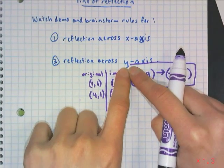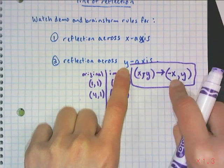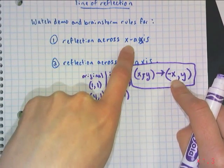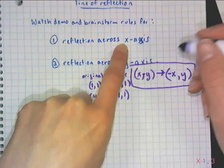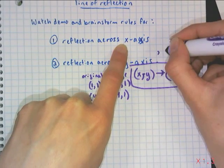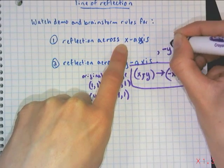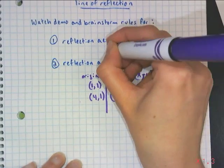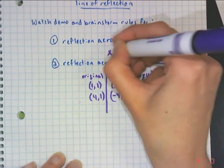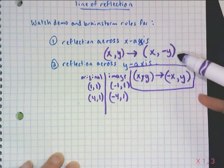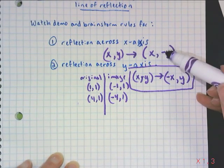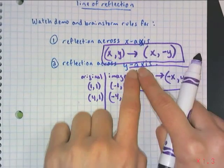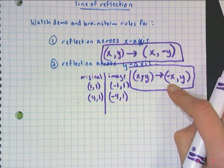So the rules for reflections are: when reflecting across the Y-axis, X becomes its opposite and Y stays the same. When reflecting across the X-axis, Y becomes its opposite and X stays the same. A helpful way to remember: the axis you're reflecting across — the opposite of that axis becomes opposite.